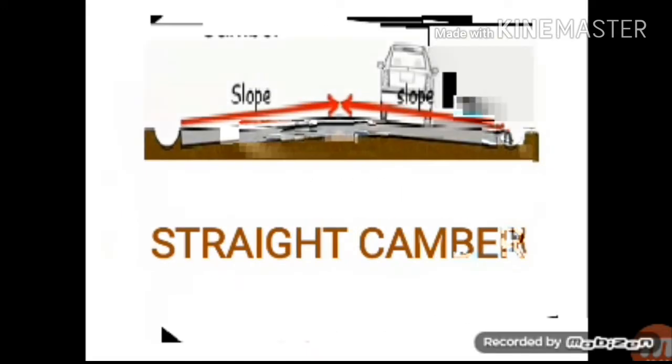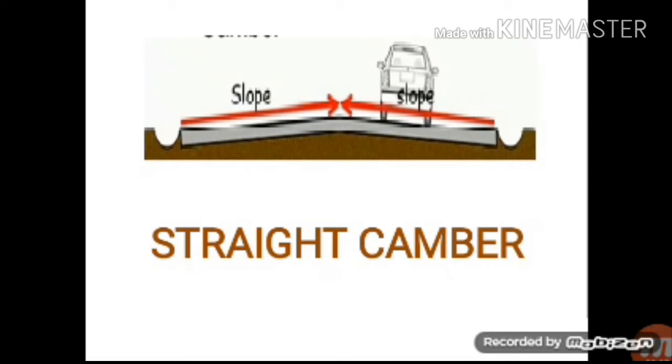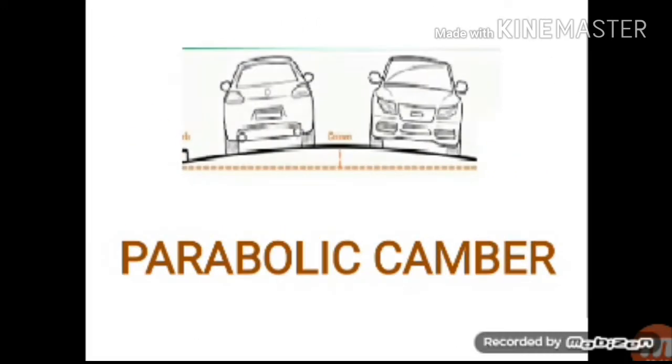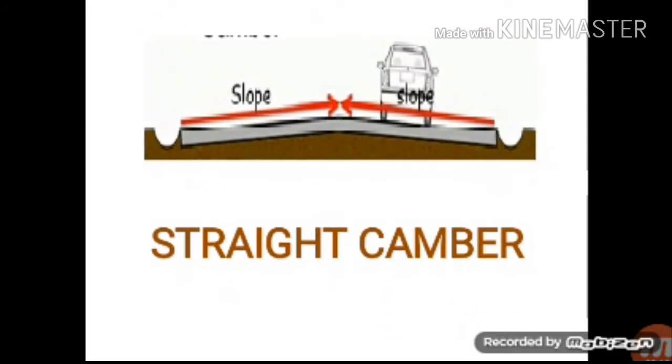Straight Camber is the concept of the road. If you go back at the edge, the height is the same. Straight is stop. The height is same. The height is straight. There are two sides, the slope doesn't matter. The slope is straight. Straight Camber.